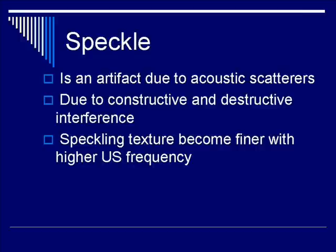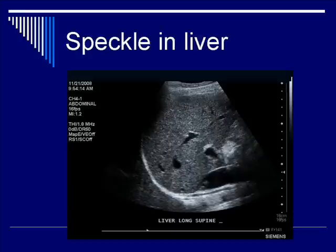The last order of business is to talk about speckle. Speckle is technically an artifact due to acoustic scatterers. As you know from the first lecture, acoustic scatterers are highly dependent on frequency — the higher the frequency, the more reflection comes back from these scatterers. The mechanism is due to constructive and destructive interference, and the texture becomes finer and more intense with higher ultrasound frequency. This is an ultrasound image of the liver, which is an example of a structure with speckle. Other structures include thyroid, testicles, and many smaller organs that have this property.